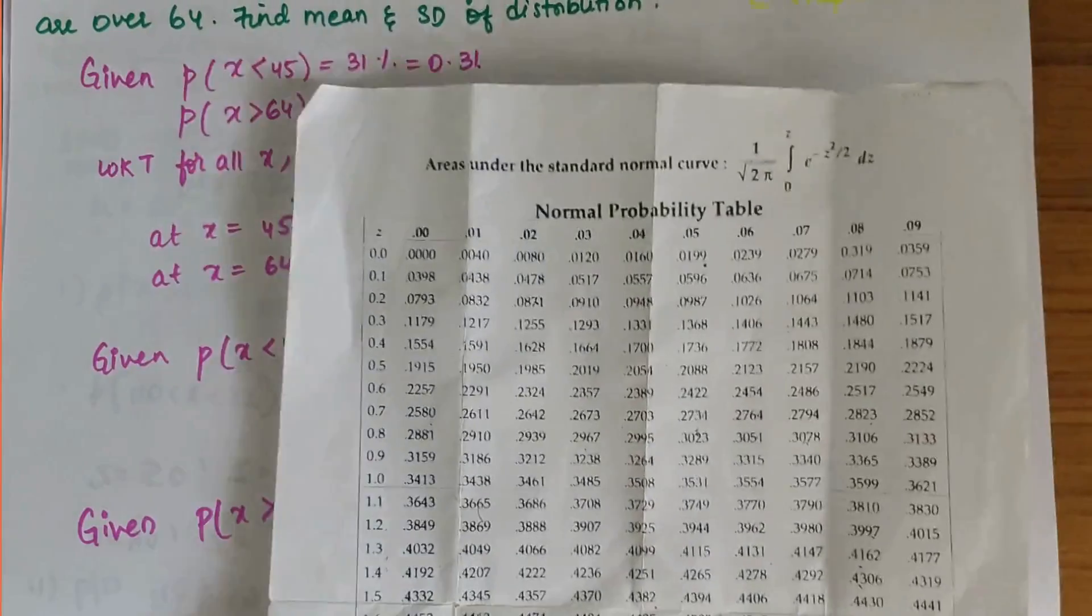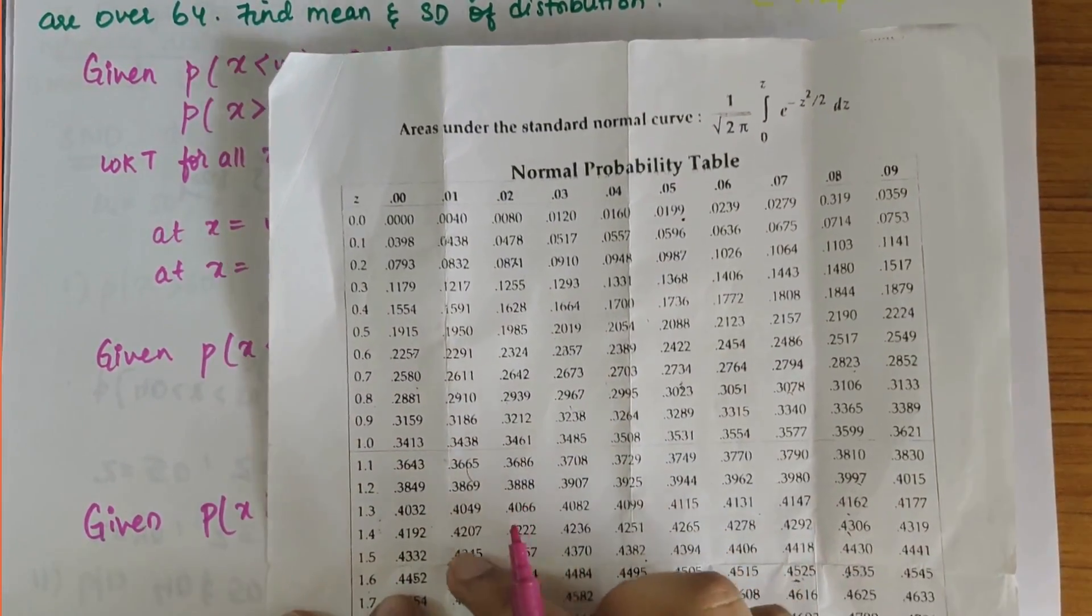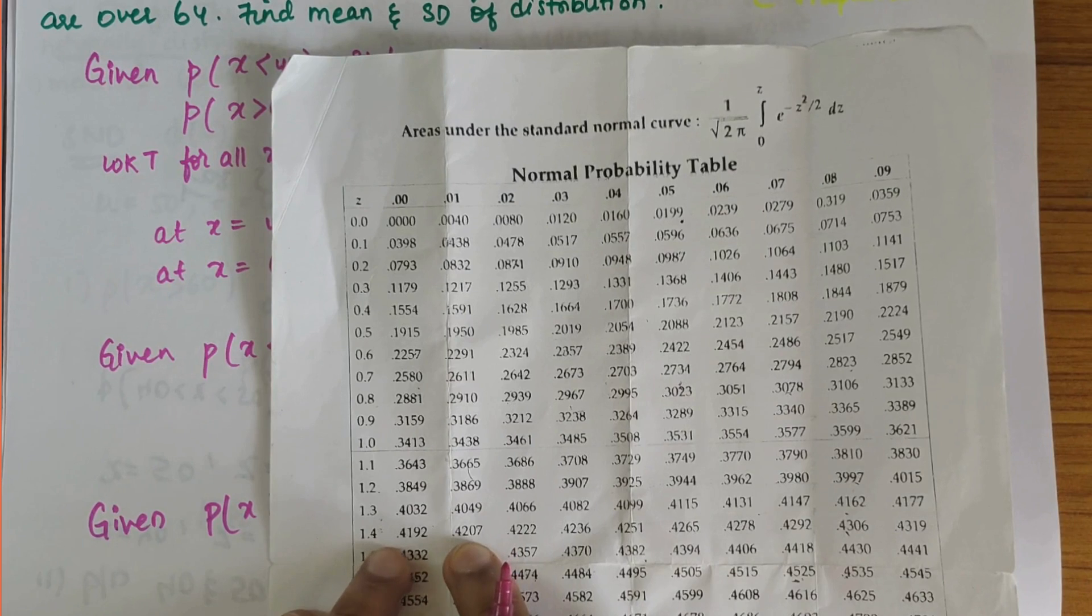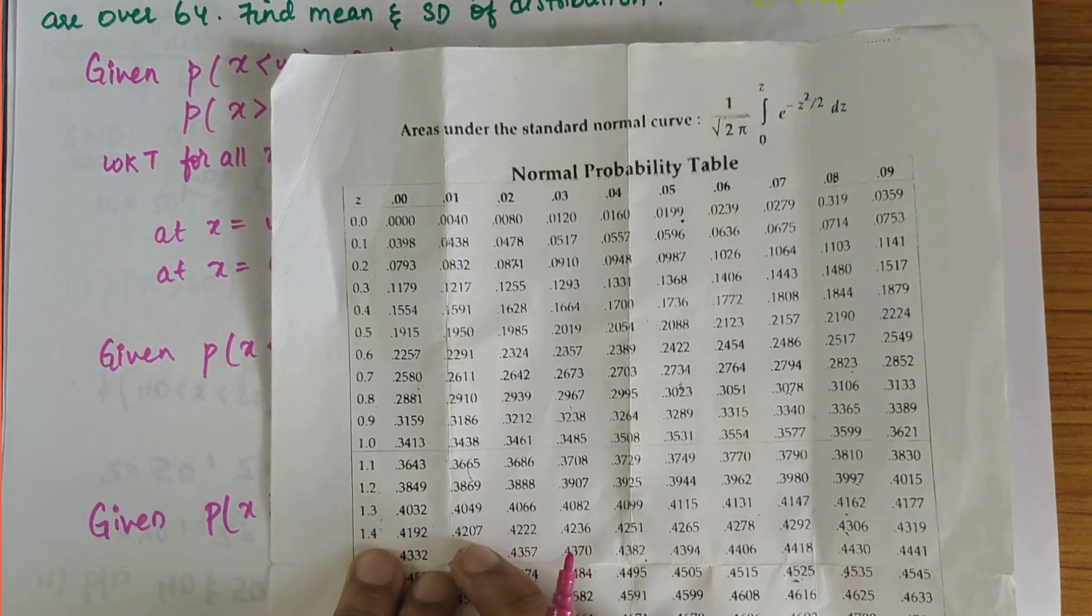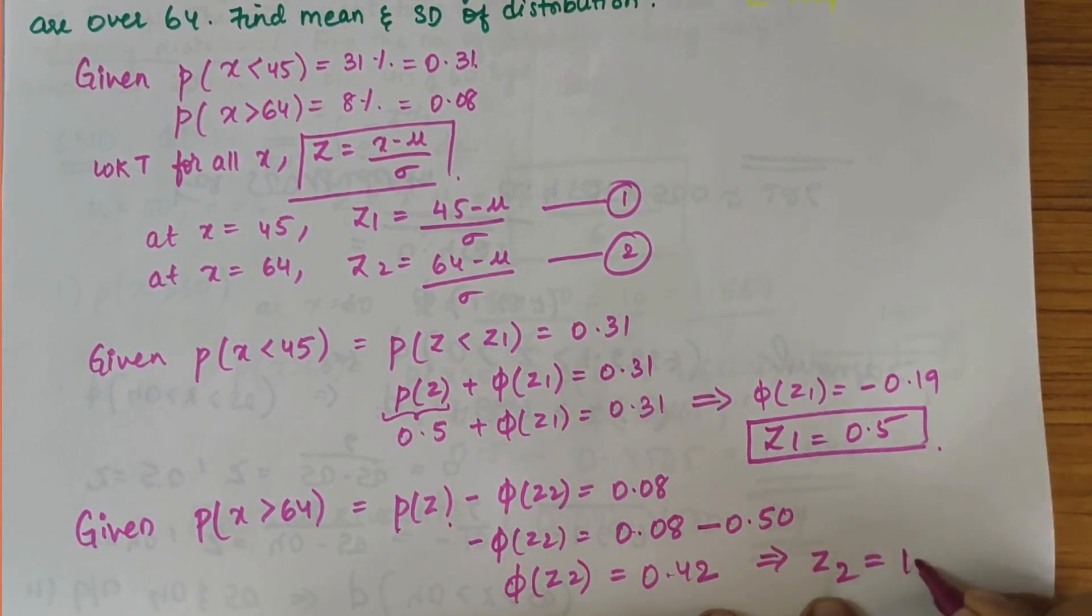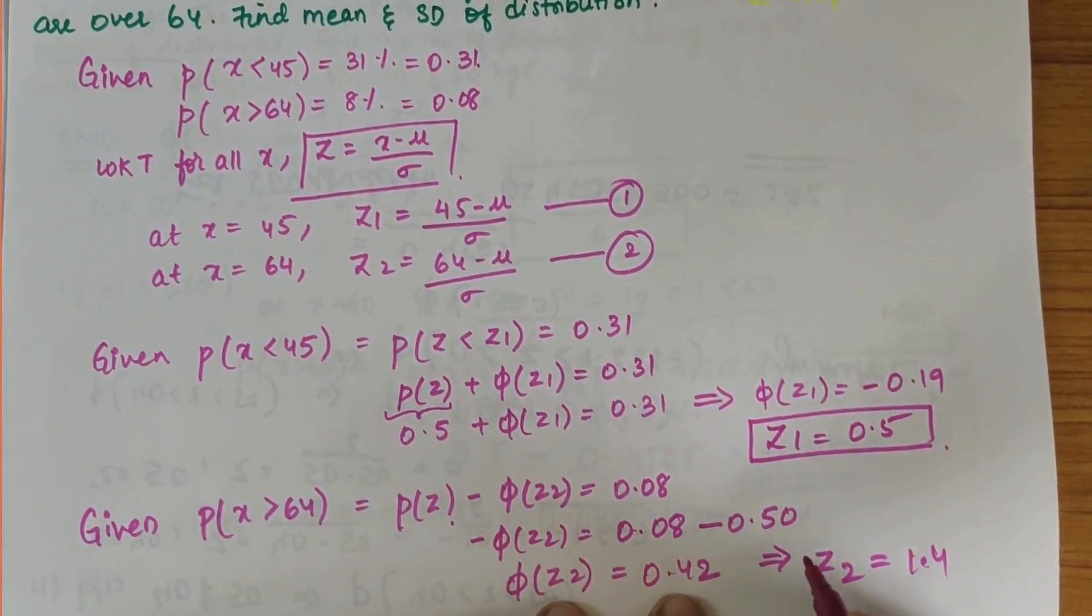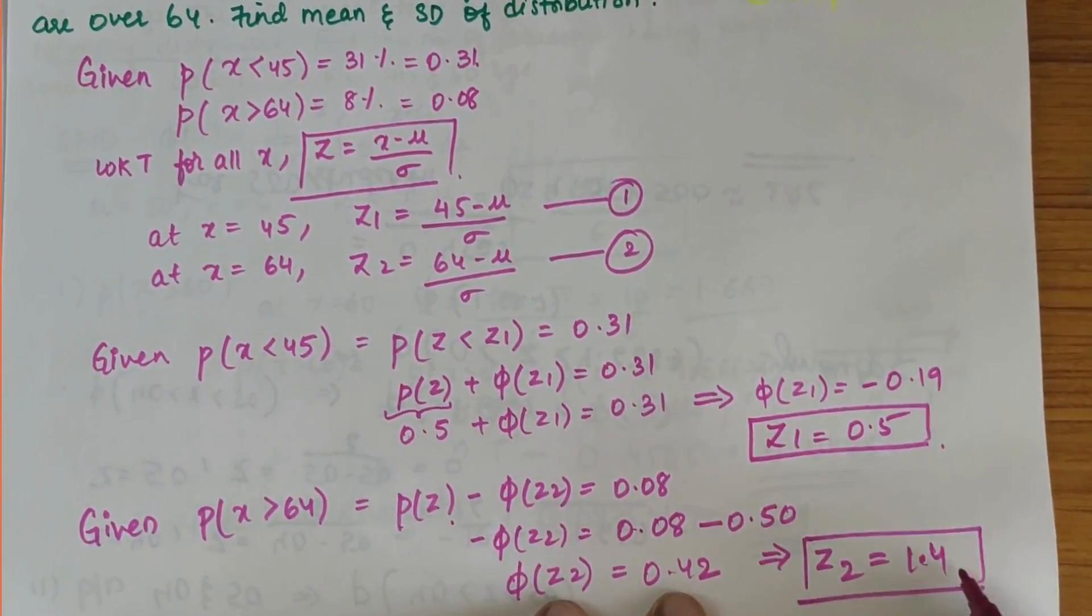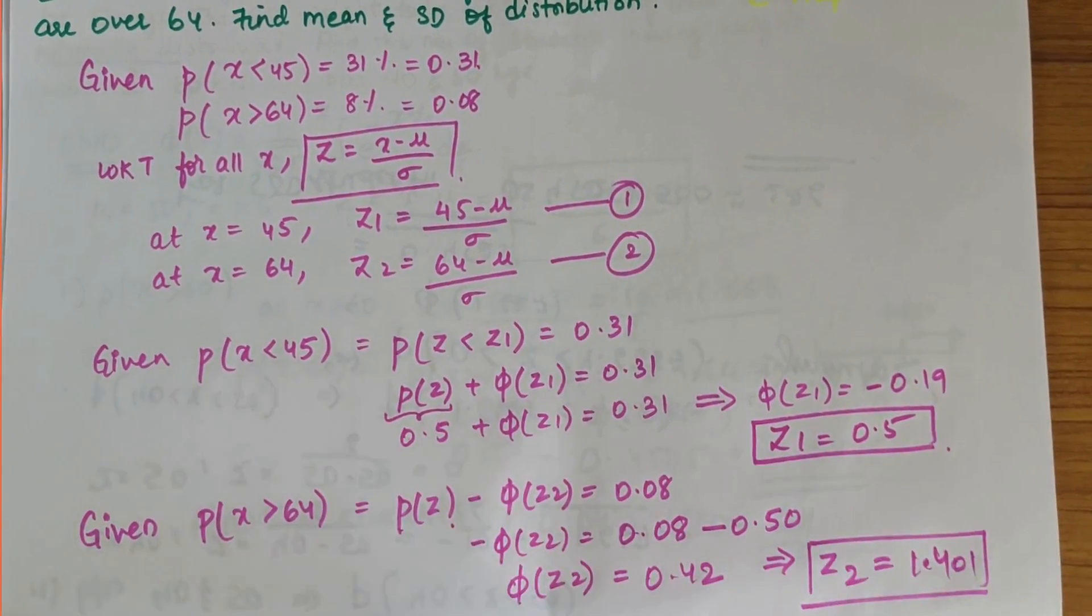If you solve this, φ(Z2) = 0.42. So the Z2 value would be found by looking up 0.42 in the table. 0.42 is at 1.41, so Z2 = 1.41, or more precisely 1.401.